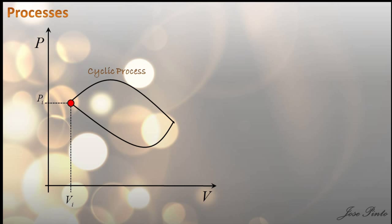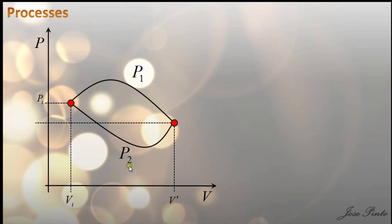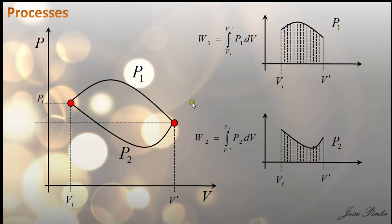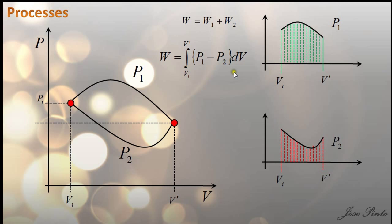Now if you want to calculate the work done by the system in a cyclic process, you can choose a point V' and identify the equations for pressure on the upper and lower parts of the curve — call this P1 and P2. Integrating P1 gives the work done going from one point to another, and integrating P2 gives the work done going back to the initial state. Adding these together, you are actually subtracting these two areas, so you are left with the area inside the closed curve.